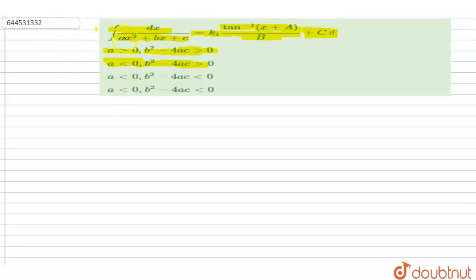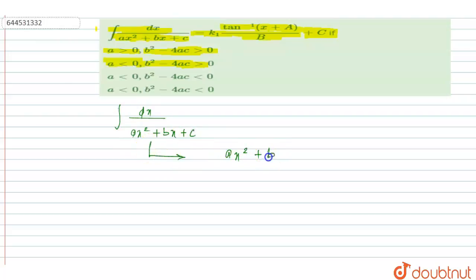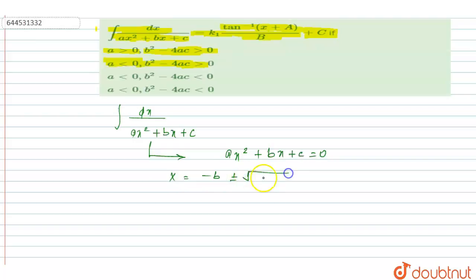Firstly, the given condition is the integration of dx upon ax² + bx + c. Take ax² + bx + c = 0. This is the quadratic equation. Then the roots of this equation are x = (-b ± √(b² - 4ac)) / 2a.